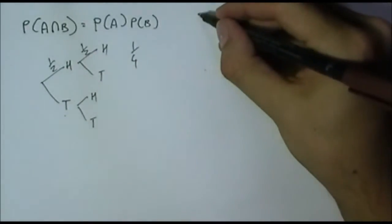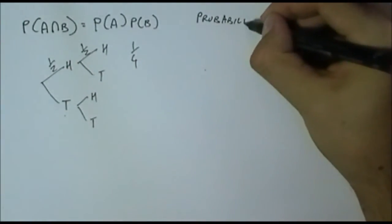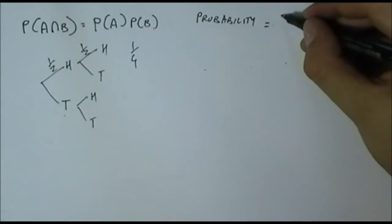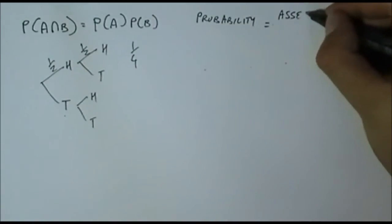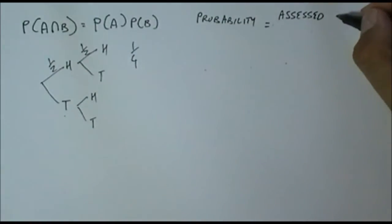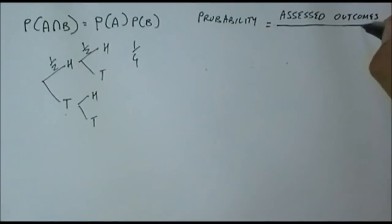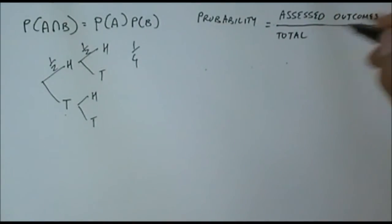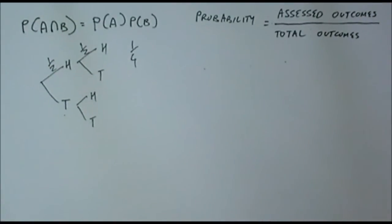We're going to see mathematically why it is that we multiply two probabilities. We start off by looking at the definition of probability. Probability by definition is the number of outcomes under assessment — the assessed outcomes — over the total of equally likely outcomes. So it's the assessed outcomes over total outcomes.